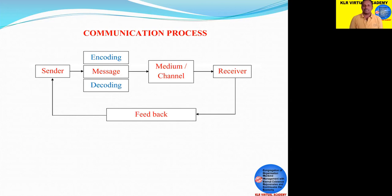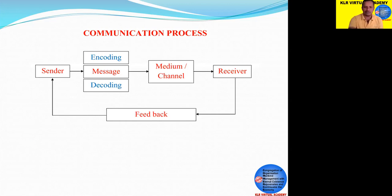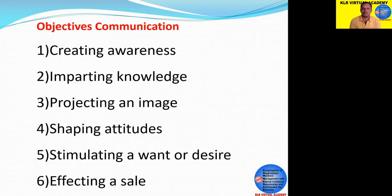Missing even a single element of this process will lead to ineffective, incomplete, or failed communication. Students need to know the role of the sender, the nature of the message, available communication channels, the role of the receiver, and the importance of feedback. Now we are moving to the next topic: objectives of communication. Communication is an exchange process, and when it is carried out for a particular meaning and purpose, those purposes are called objectives of communication.